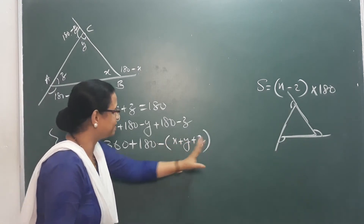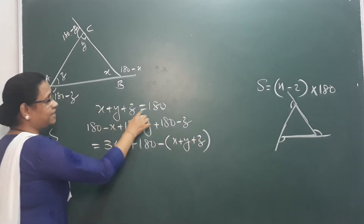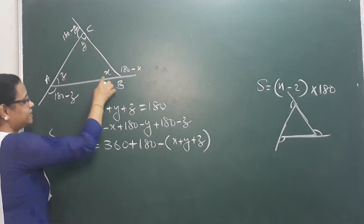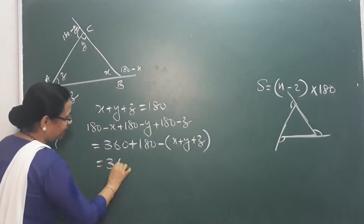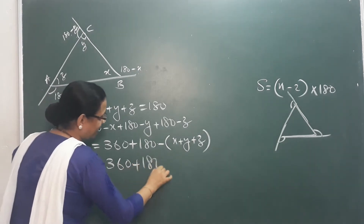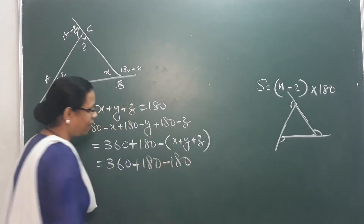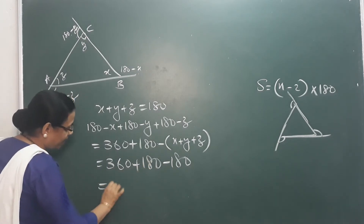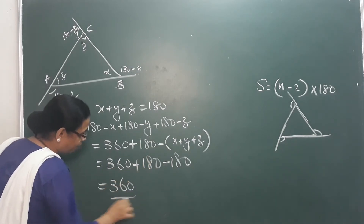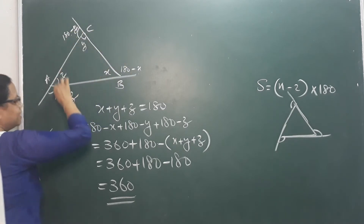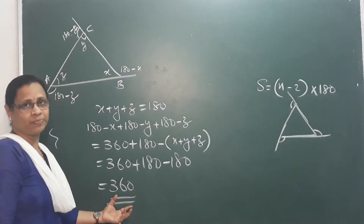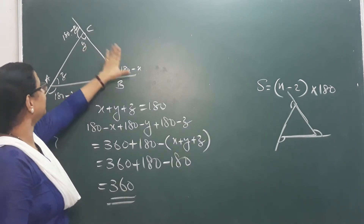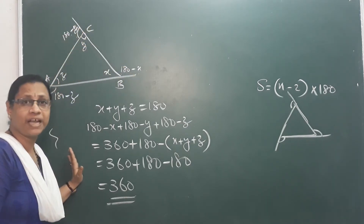We know x plus y plus z equals 180. So we substitute: 360 plus 180 minus 180. The plus 180 and minus 180 cancel out. Therefore, we can find that the outer angle sum equals 360.